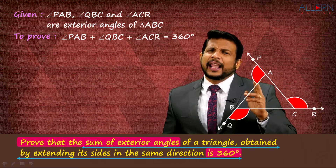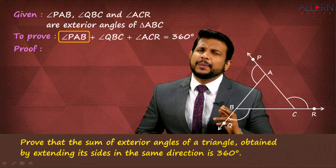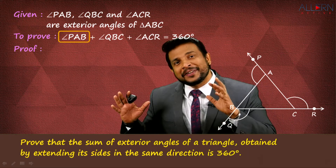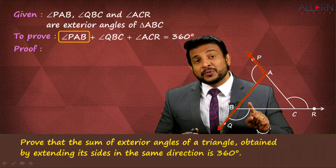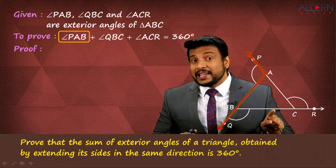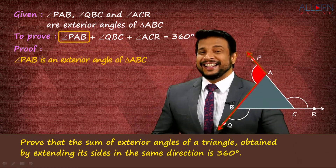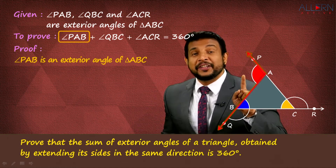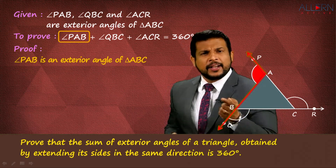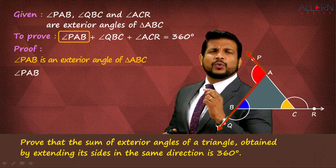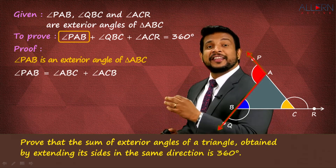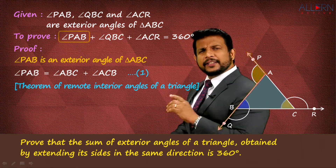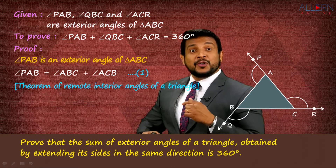Since we are talking about an exterior angle, let's take one angle at a time. Angle PAB is an exterior angle of triangle ABC, so its measure equals the sum of the two remote interior angles: angle ABC and angle ACB. By the theorem of remote interior angles, angle PAB = angle ABC + angle ACB. Let's mark this as Result 1.